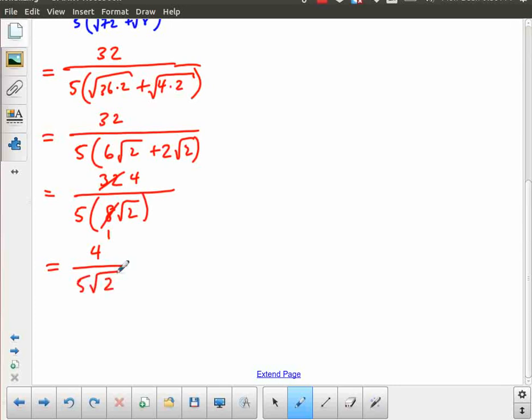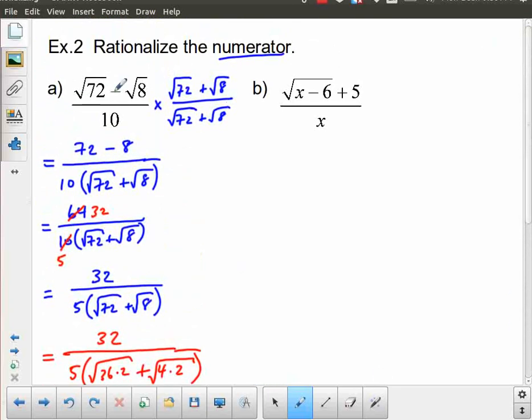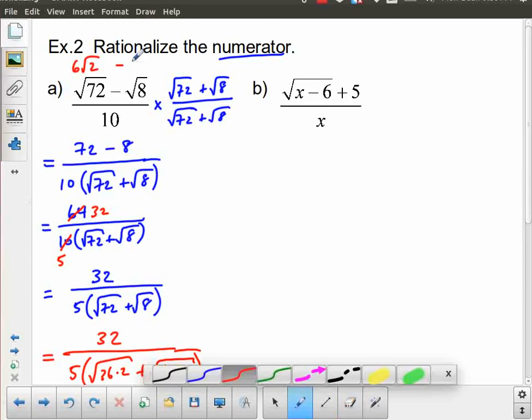Also to point out, we could have actually done some of this simplification right away. We had √72 minus √8, which we could have written here as, actually, let me just write it in its simplified form. √72 is actually 6√2 minus 2√2. So we could have actually made that simplification right away, which would have made things much easier. But part of the idea here was to show you that the idea of multiplying by the conjugate still applies, whether it's a numerator or a denominator.